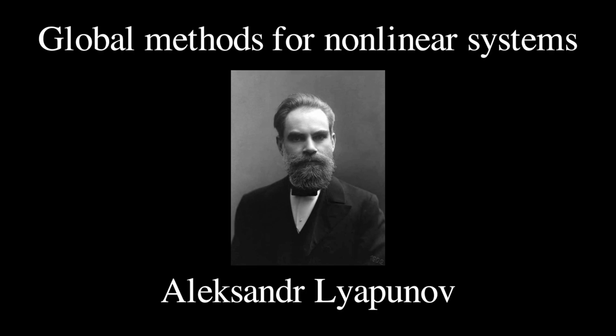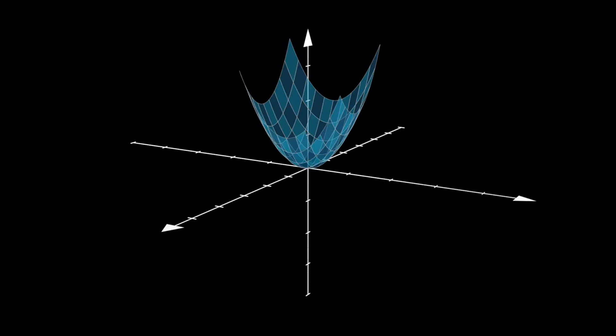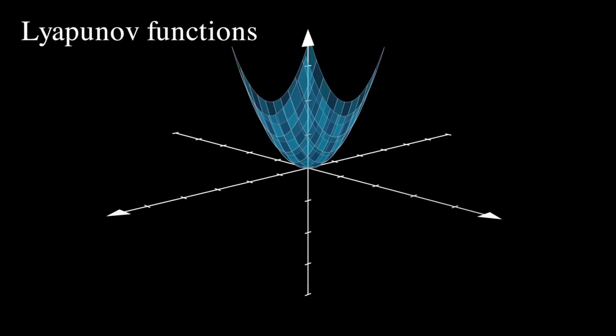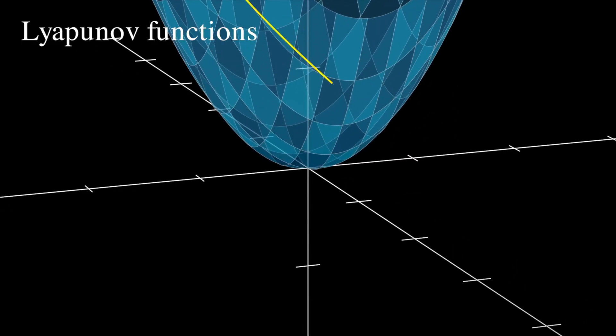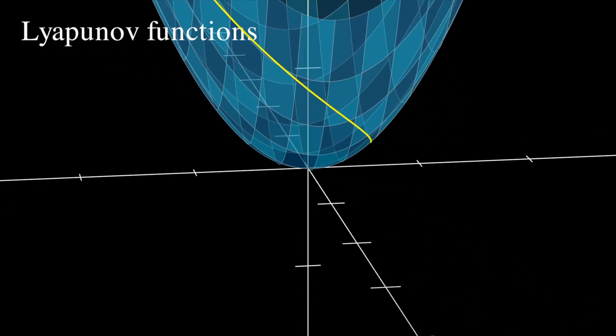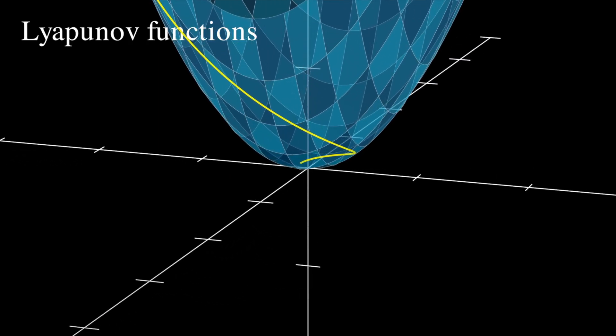Alexander Lyapunov developed a clever approach to globally analyze dynamical systems. Suppose we have a function of the states, V, that's always greater than or equal to zero or positive semi-definite. And the time rate of change of V is always less than or equal to zero. You can imagine this function as a storage or energy-like function that's always going down over time. If we can find a function for our system that has these properties, then the zero level set, or where V equals zero, is globally asymptotically stable. In other words, the states approach where V equals zero as time goes to infinity.